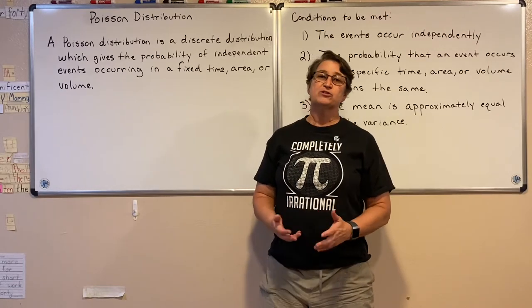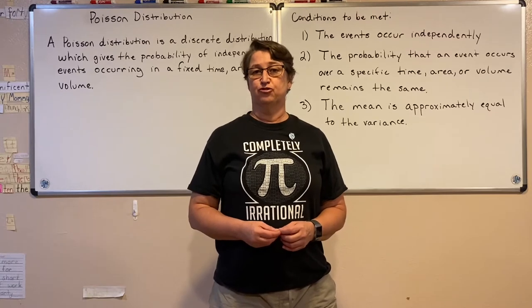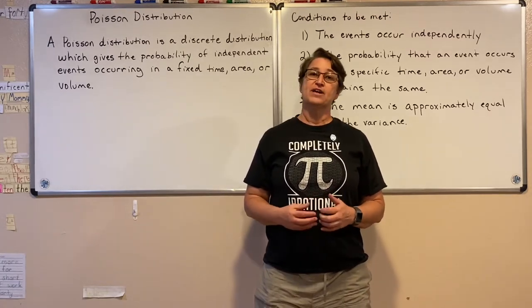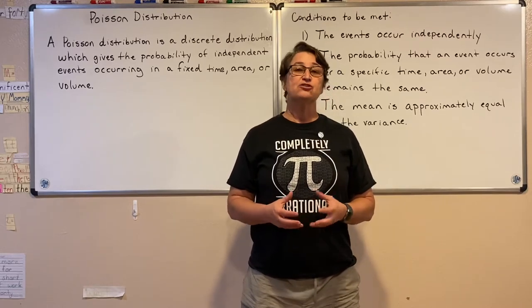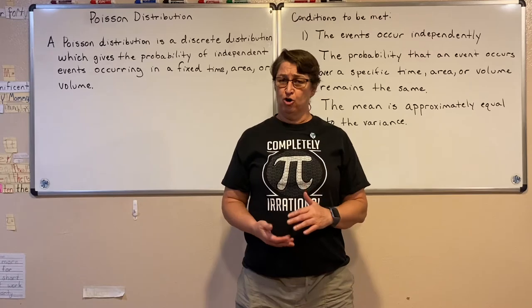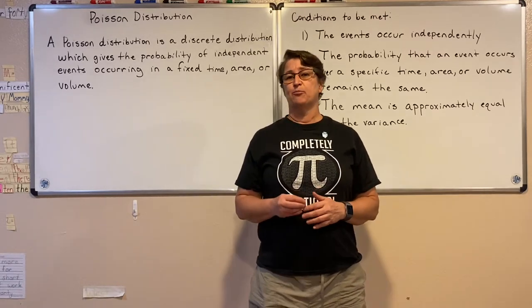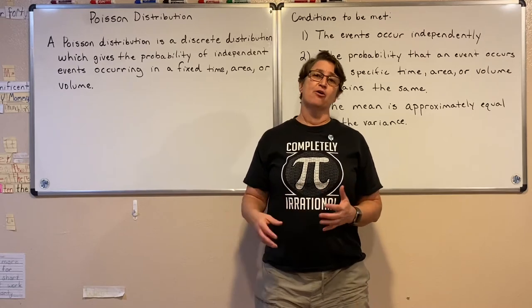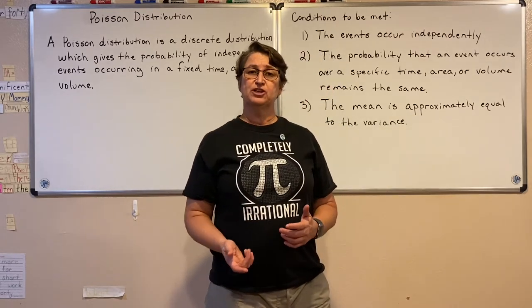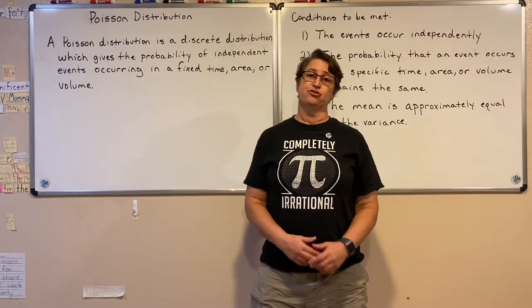The Poisson distribution is another discrete probability distribution that tells us the probability that an event occurs in a certain time, area, or volume. There are certain conditions that must be met in order for it to be a Poisson distribution.